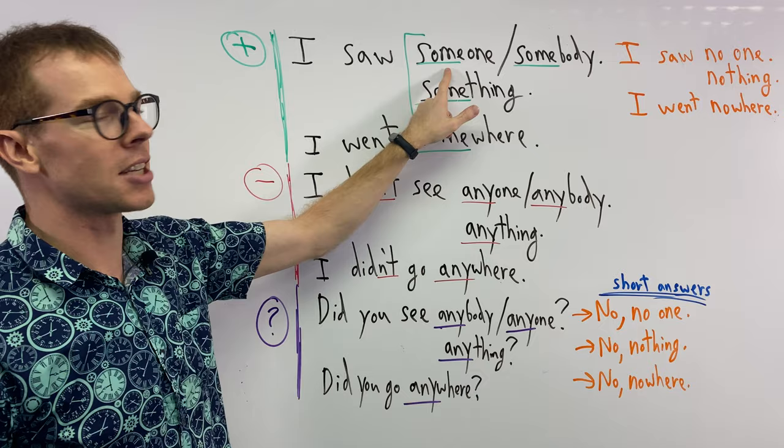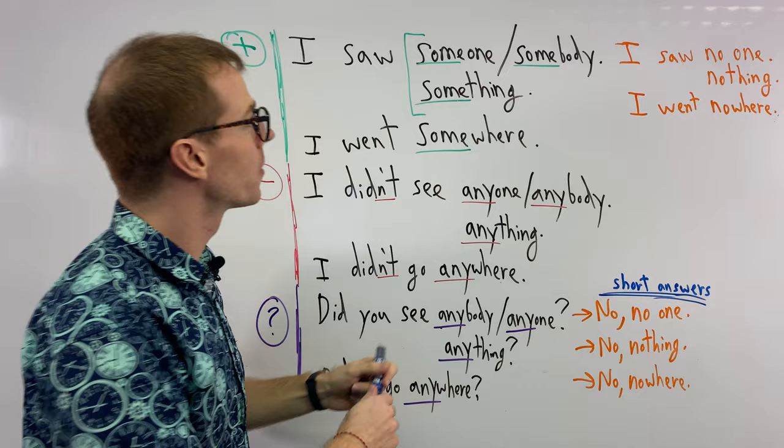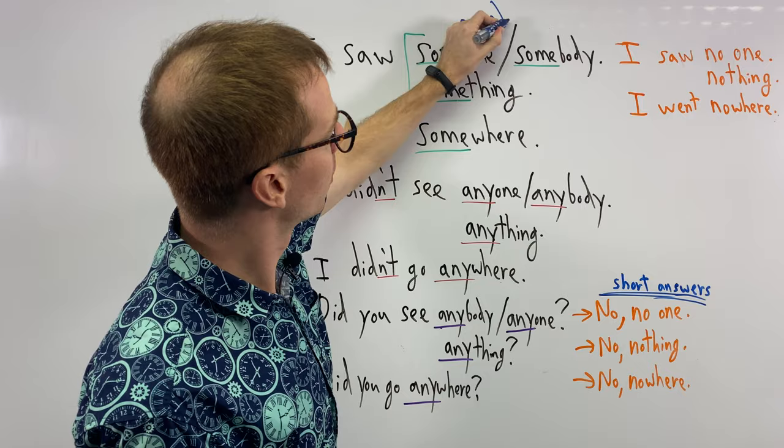You could say, oh I saw someone, I saw somebody, right? Both of these, the someone, the somebody, these ones we use for people. For people, someone, somebody.